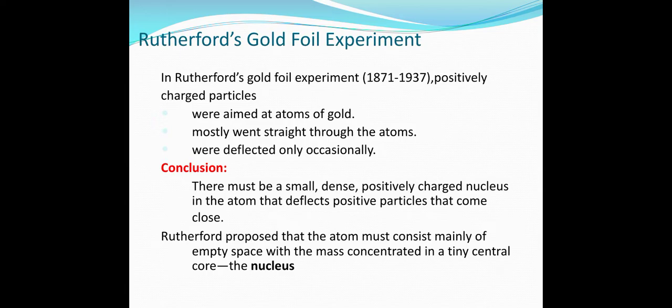In the gold foil experiment, alpha particles aimed at gold atoms mostly went straight through and were only occasionally deflected. The conclusion is that there must be a small, dense, positively charged nucleus in the atom. Positive alpha particles that come close are repelled by the positive nucleus. The atom must consist mainly of empty space with mass concentrated in a tiny central nucleus.